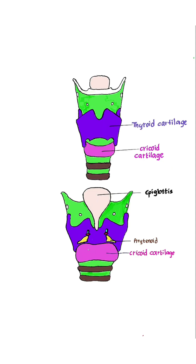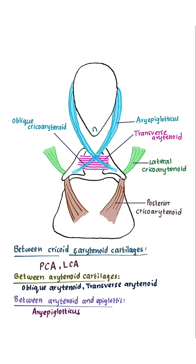On the posterior aspect, remember the three cartilages: cricoid cartilage, arytenoid cartilage, and epiglottis. Go from below upwards. Between the cricoid cartilage and arytenoid cartilage, there are two muscles: posterior cricoarytenoid and lateral cricoarytenoid.